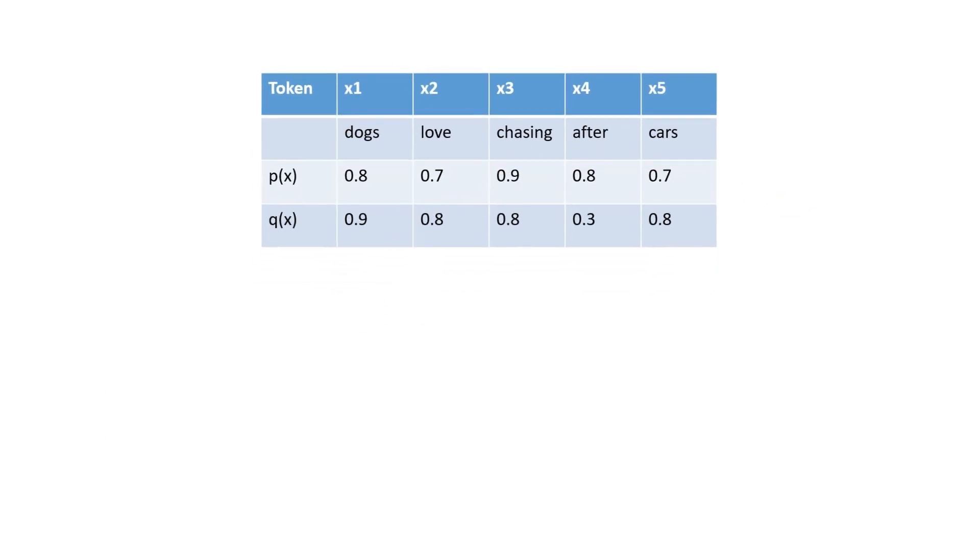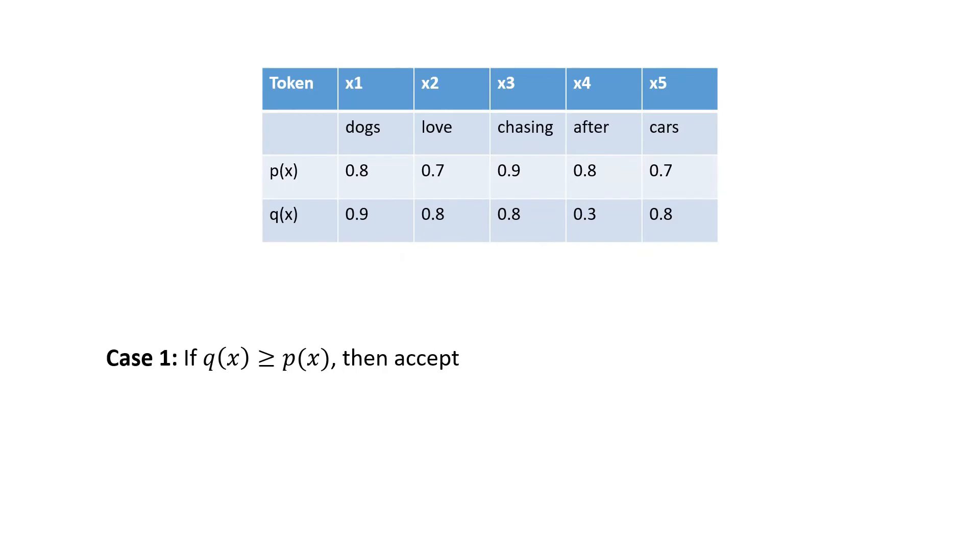So each iteration of the algorithm has two cases. In the first case, if q is greater than p, then we just accept the token. And here, this is a case for the first token and the second token. The q here is greater than p. And intuitively here, the draft model, p(x), has generated a token. And the target model is even more confident that it is correct than the draft model. So we just accept it.